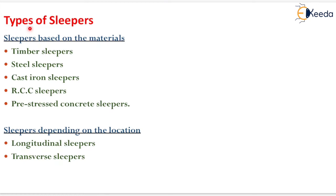Types of sleepers: based on material, sleepers are classified as timber sleepers, steel sleepers, cast iron sleepers, RCC sleepers, and pre-stressed concrete sleepers. Depending on location, sleepers are classified as longitudinal sleepers and transverse sleepers.